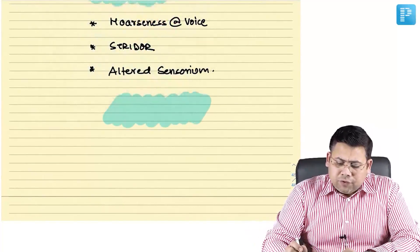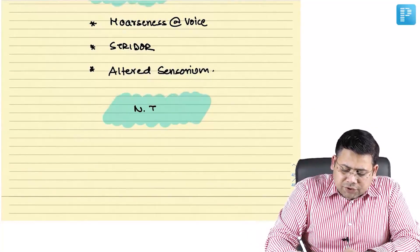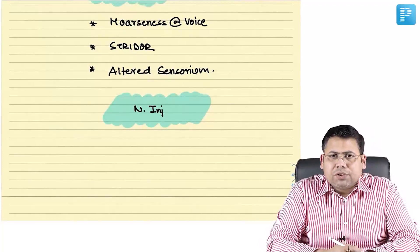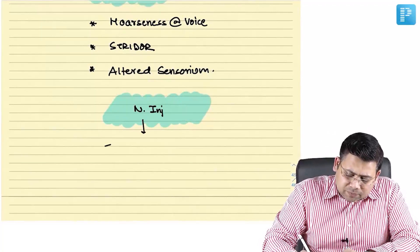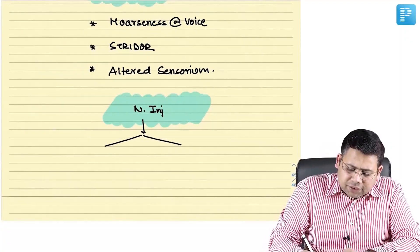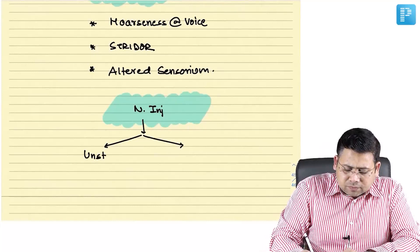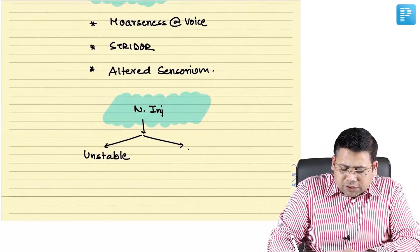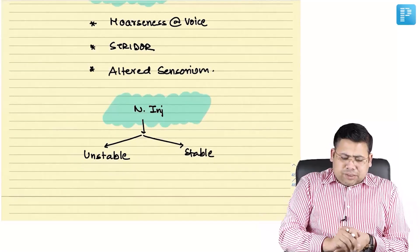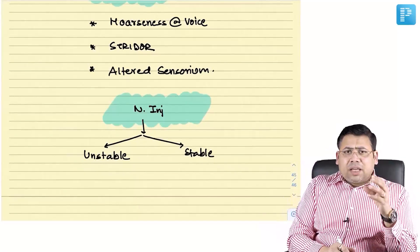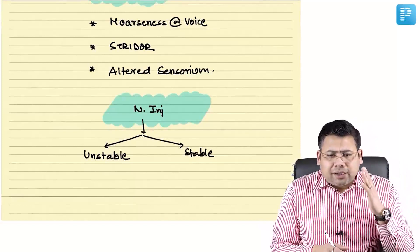Whenever you have a patient with neck injury, the next thing to check is whether the patient is unstable or stable. The moment the patient is unstable, you think about vascular injury and are tempted to go for a surgical option.